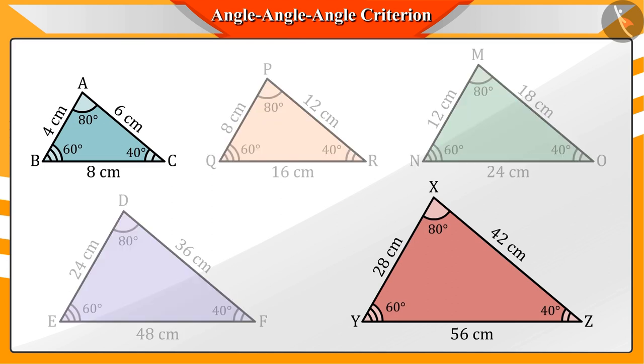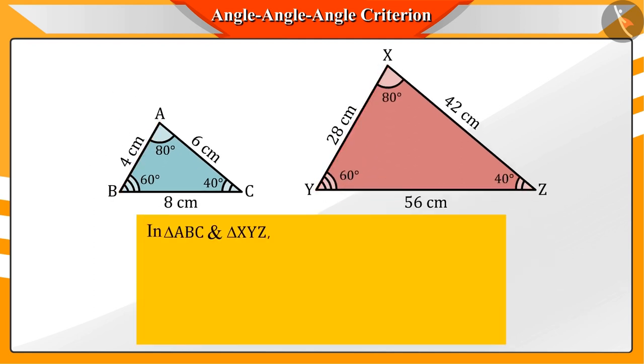Now, if we observe the triangles ABC and XYZ, then we see that their corresponding sides are proportional.